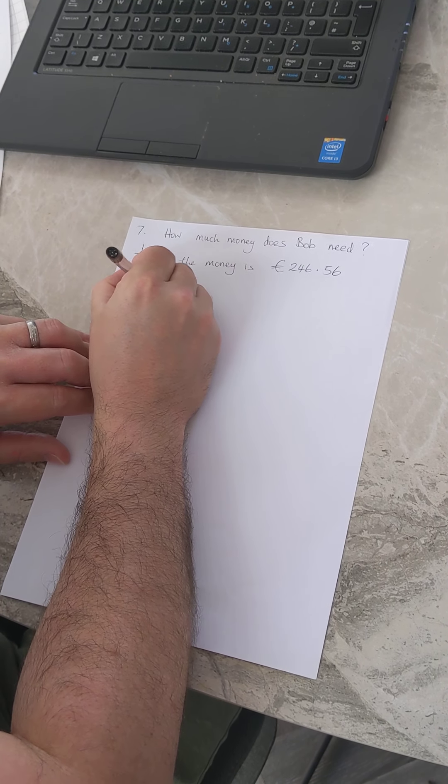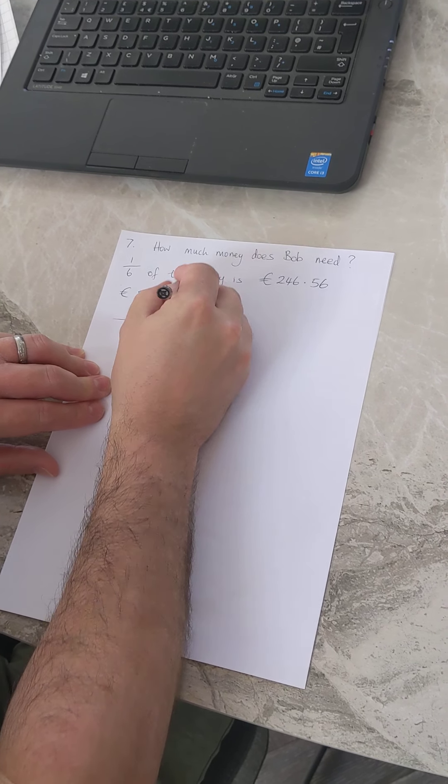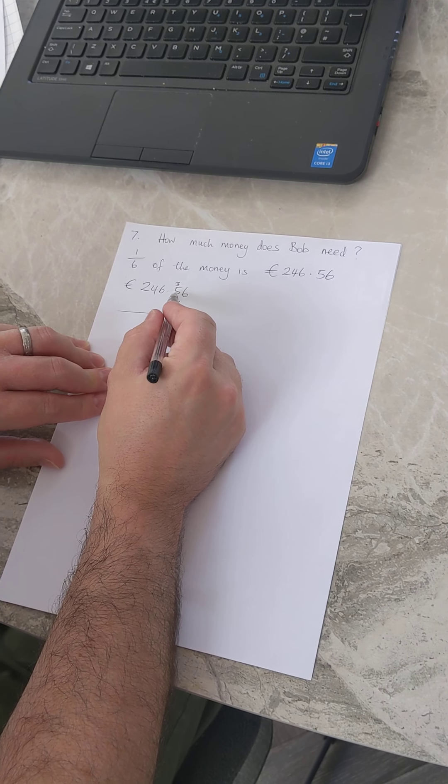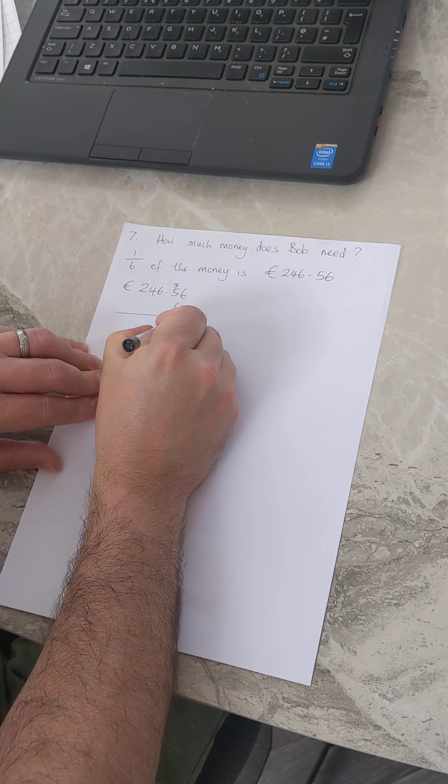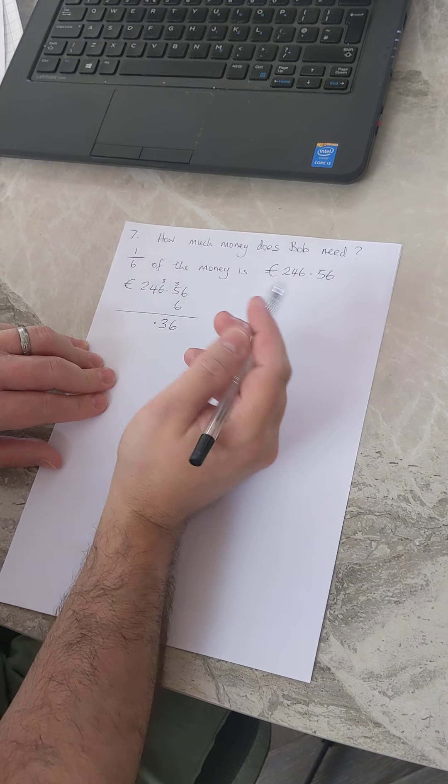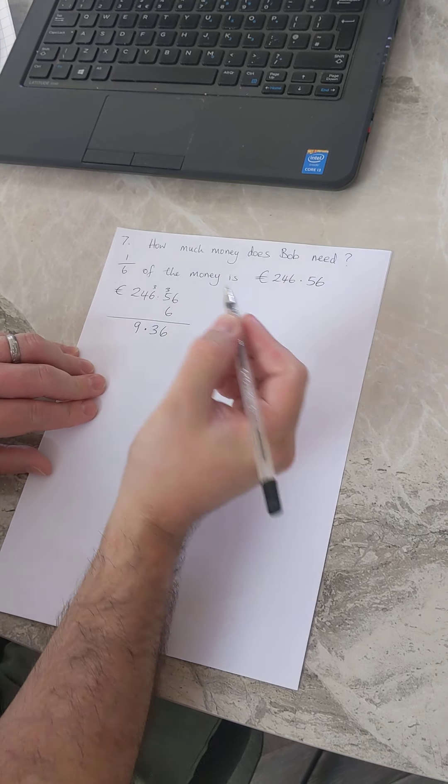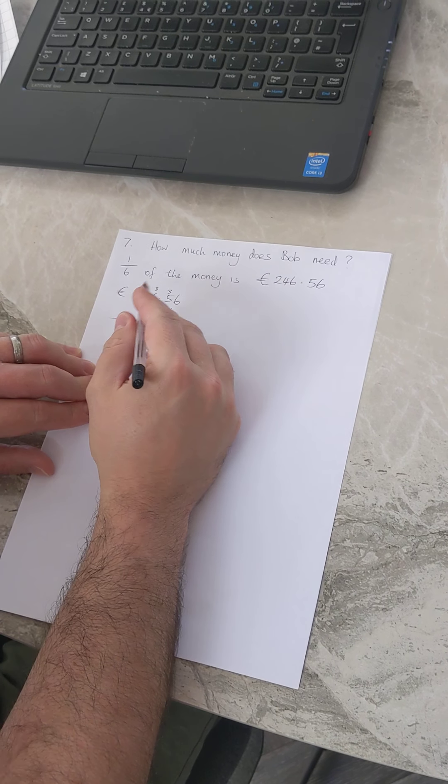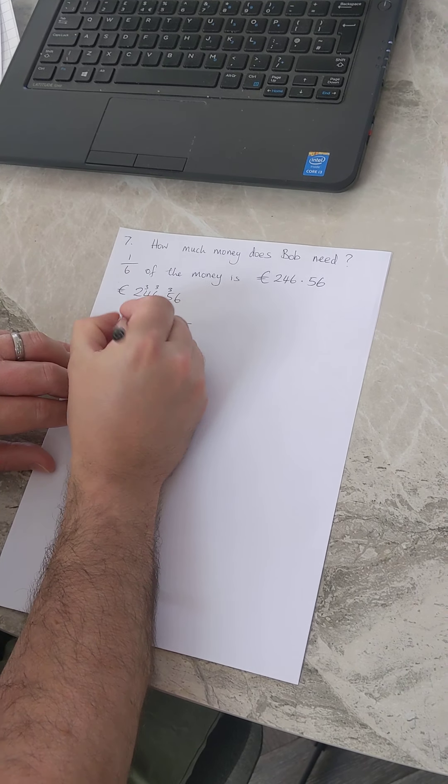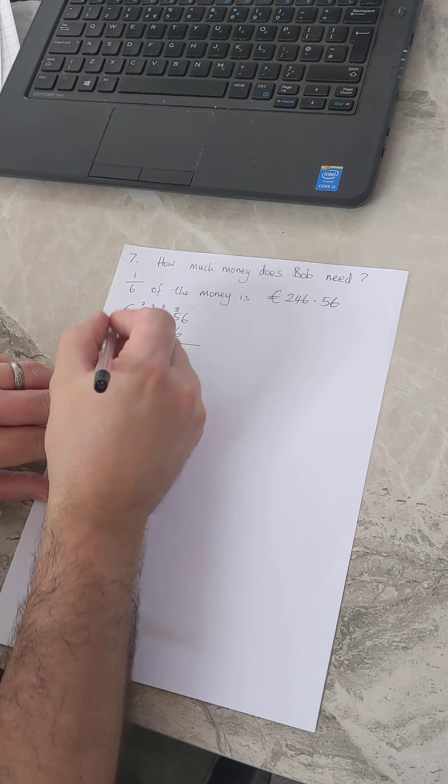So I'm going to do that first. Six sixes are 36, so my three tens go up here. Six fives are 30 plus that three is 33. Now again 33, I've got another three tens up here. Six sixes are 36 and that three makes 39. Again another three tens going up here. Six fours are 24 and that three makes 27. So then two tens going up here at the end. Six twos are 12 and that two makes 14.